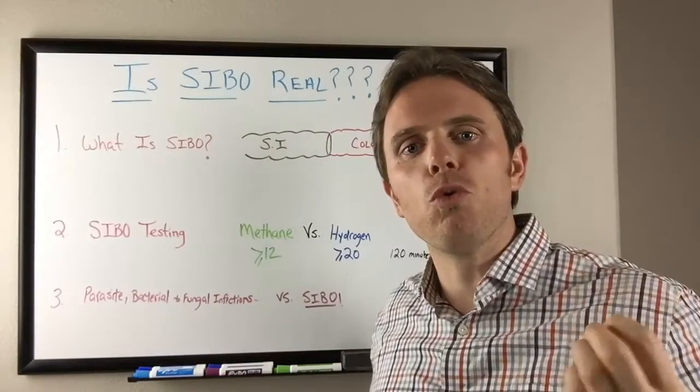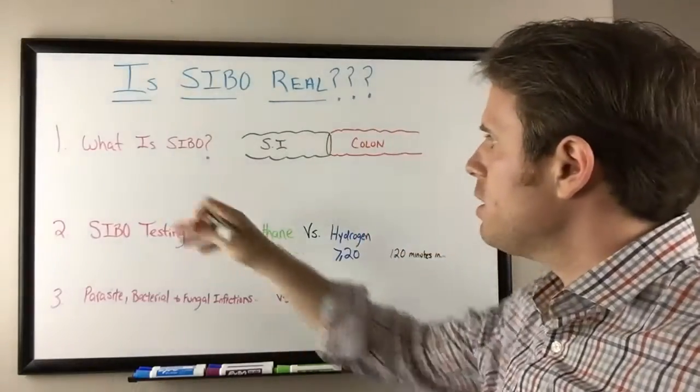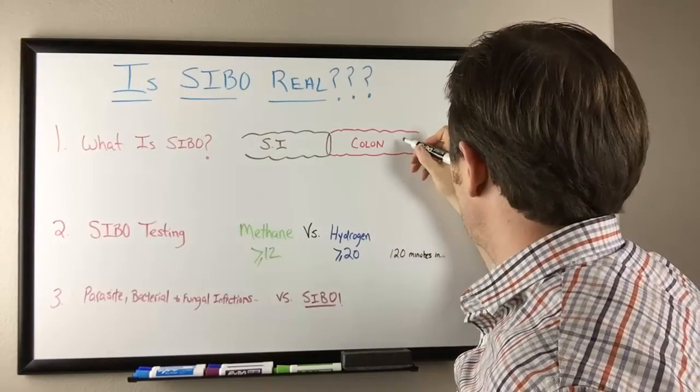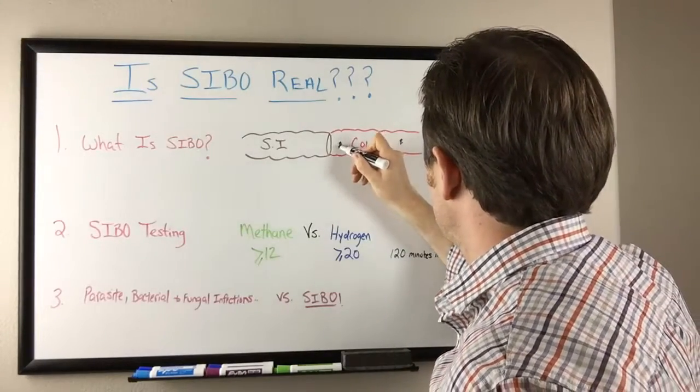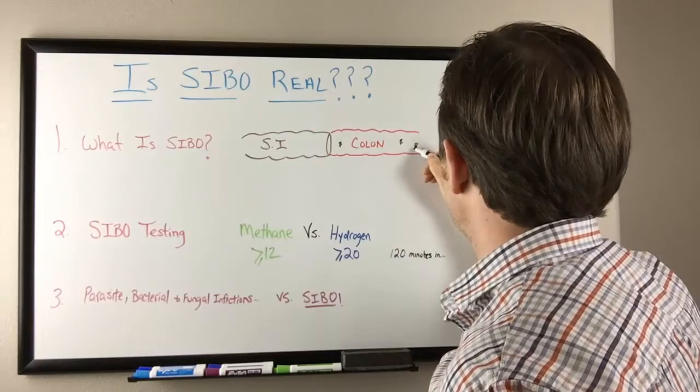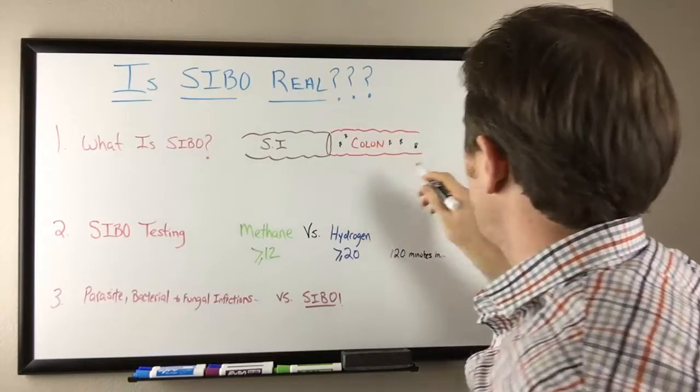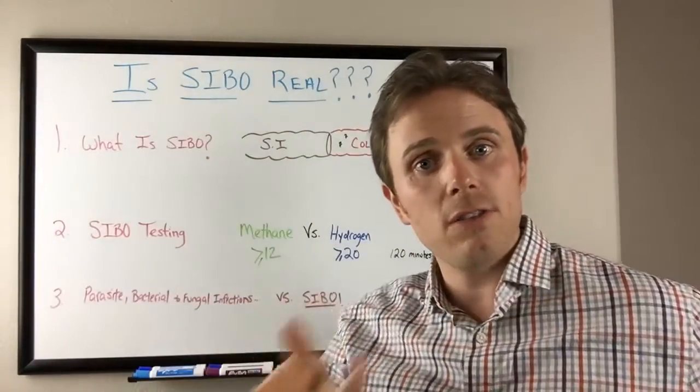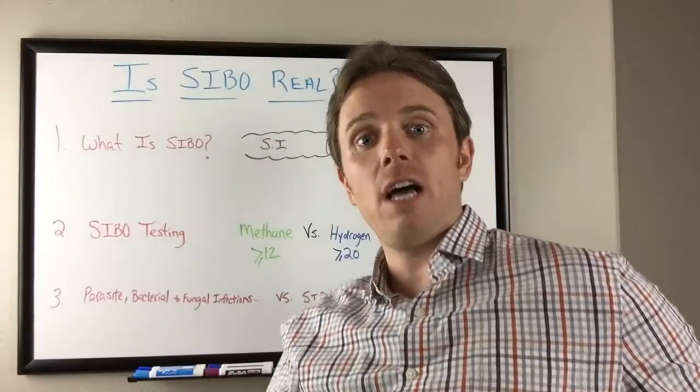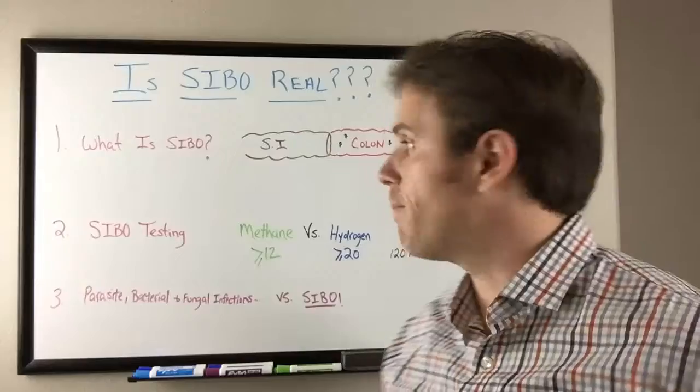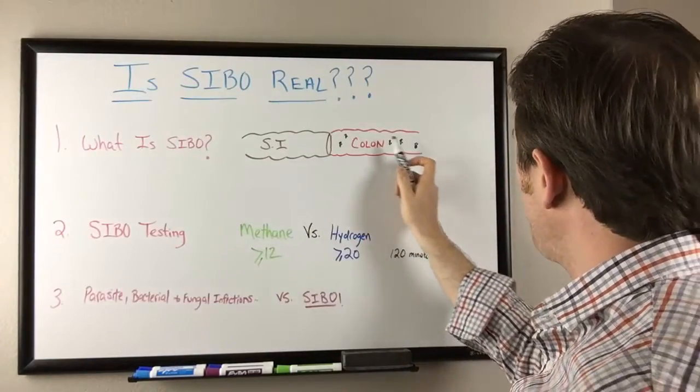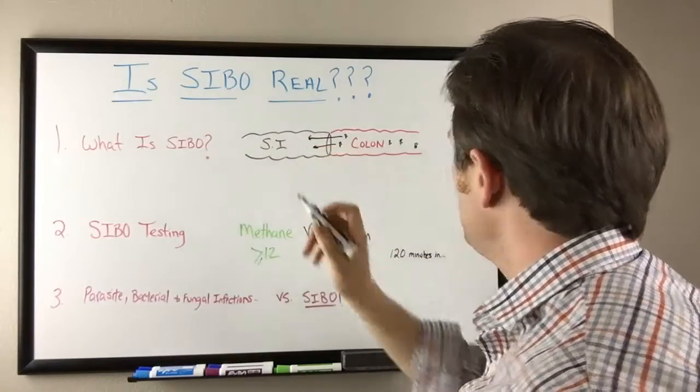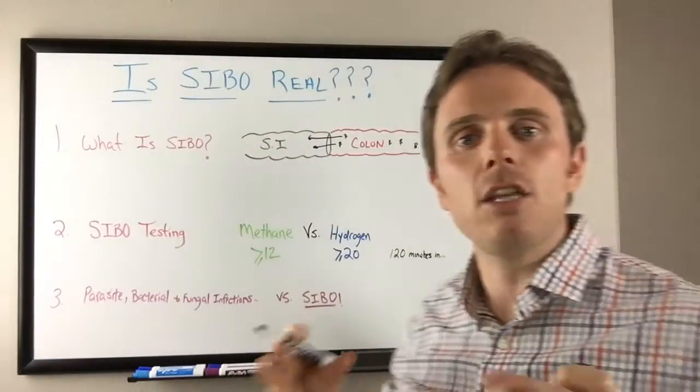For instance, SIBO is a small intestinal bacterial overgrowth, so essentially we have specific bacteria in the colon. I'll just draw some bees here—the bees are symbolic for bacteria, and these bacteria are specifically in the colon area. We have our stomach which goes into our small intestines which then goes into the colon on the right side and wraps in and around and down. What happens is this overgrowth of bacteria here starts migrating upward into the small intestinal tract, and this is really important because this kind of bacteria isn't home in the small intestine.